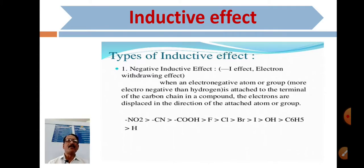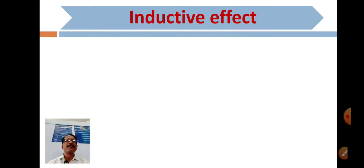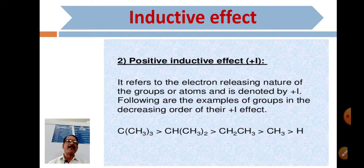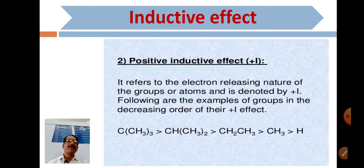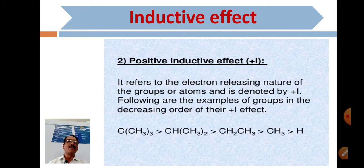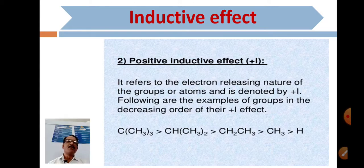Groups showing negative I effect include NO2, CN, CHO, fluorine, chlorine, bromine, iodine, OH, C6H5, and H. The positive I effect refers to the electron-releasing nature of groups and is denoted by +I. Examples in decreasing order of +I effect are: tertiary butyl group, then isopropyl, then ethyl, then methyl, then hydrogen atom. All these groups show positive I effect.